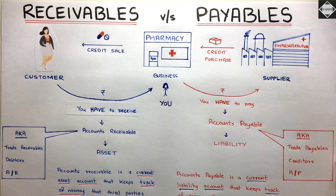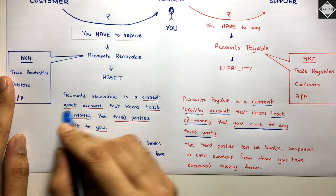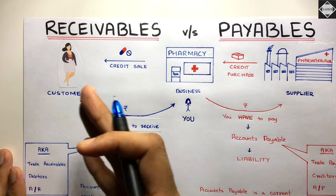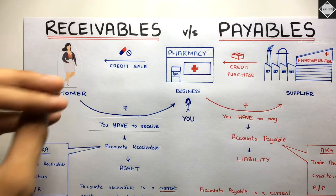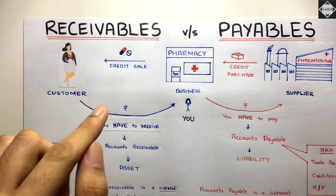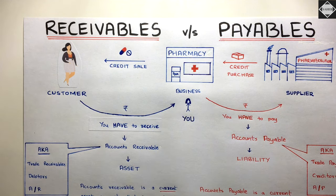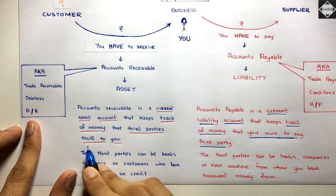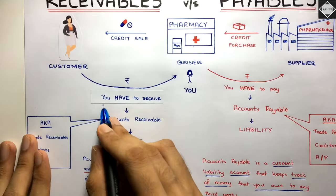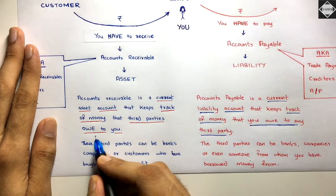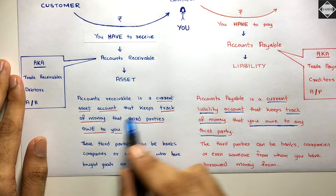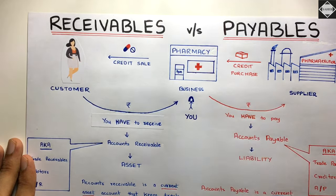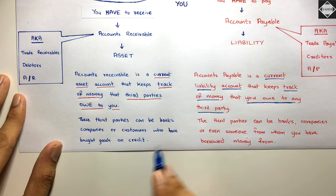Now let's look at the formal definitions. Accounts receivable is a current asset account that keeps track of money that third parties owe to you. These third parties can be a customer, a bank, any other company, or any other person from whom you have to receive money. Note: if you have already received the money, they are no longer receivables — the key is that you are supposed to receive it. These third parties owe to you because they have bought goods on credit from you.